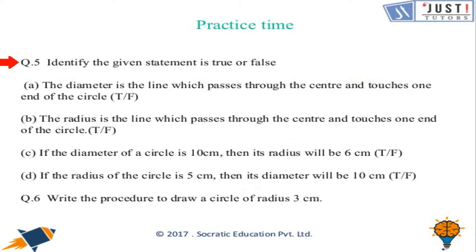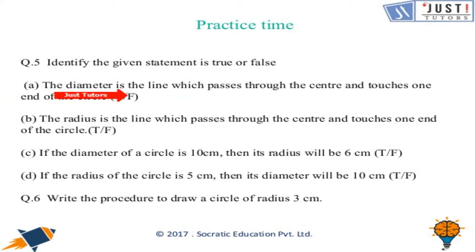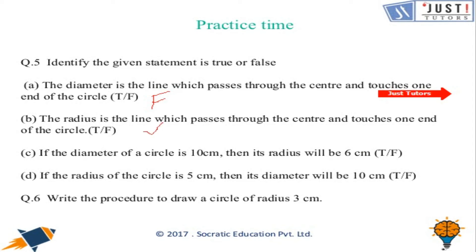Now for true and false questions — pause the video, attempt them, then check the answers. First: the diameter is the line which passes through the center and touches one end of the circle — that is false, because diameter should touch two ends of the circle. Second: the radius is the line which passes through the center and touches one end — that is true. Third: if the diameter is ten, then the radius will be six — that is false. Fourth: if the radius is five, the diameter will be ten — that is true. Finally, write the procedure to draw a circle of radius three centimeters using a compass.